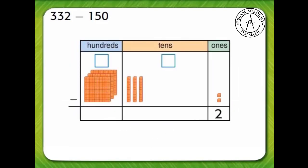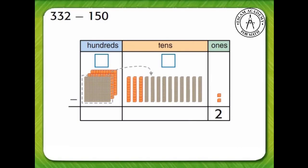Next, let's look at the tens column. Can we subtract 5 tens from 3 tens? No, we can't. We need to regroup 100 as 10 tens. Now we have 13 tens and 2 hundreds. We can subtract 5 tens from 13 tens.